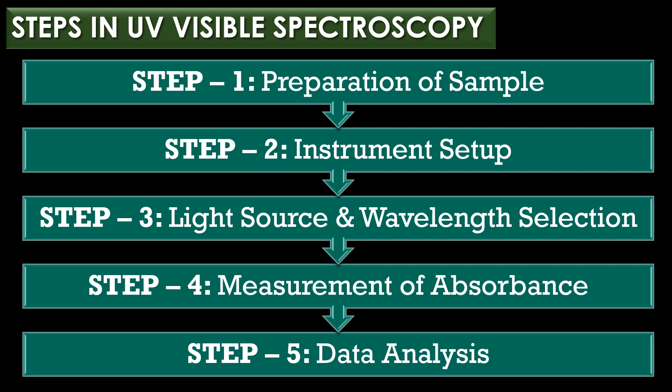The second step is instrument setup. The spectrophotometer is set to the desired wavelength range of 200 nm to 800 nm depending on the nature of the analyte. The sample is placed in a cuvette — usually a quartz cuvette for the UV region or a glass or plastic cuvette for the visible region.